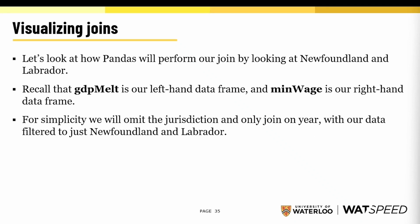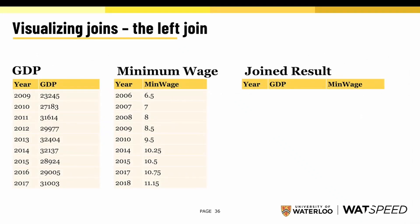We'll look at Newfoundland and Labrador data. GDP Melt is our left-hand dataframe and Minimum Wage is our right-hand dataframe. For simplicity's sake, we're going to omit jurisdiction and only join on year, and we'll assume we filtered our data just to Newfoundland and Labrador. Let's walk through the left join. Remember, GDP is our left-hand table. For every single row in GDP, we're going to scan the right-hand table to see if we have any rows with the same year.